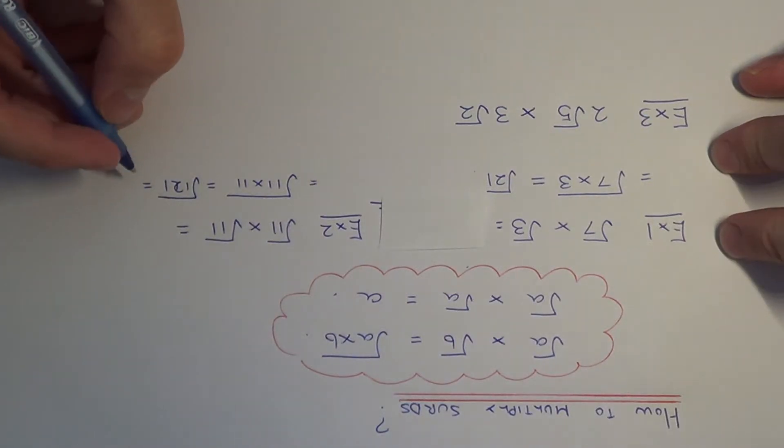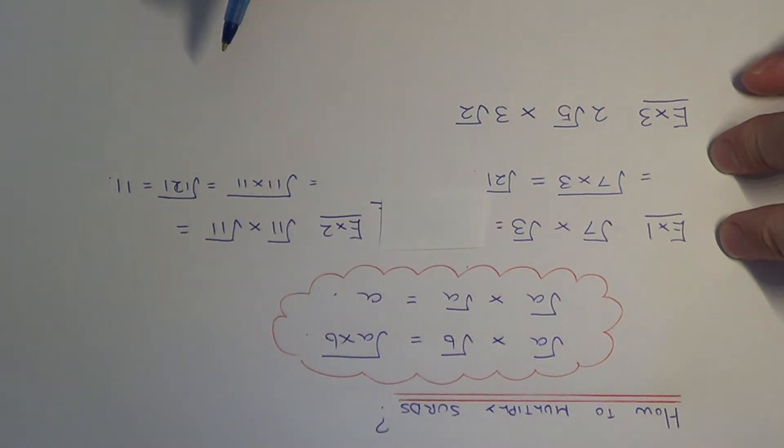We know that the square root of one hundred and twenty-one is eleven. Notice that when the two numbers underneath the roots are the same, you end up with just a whole number as your answer.